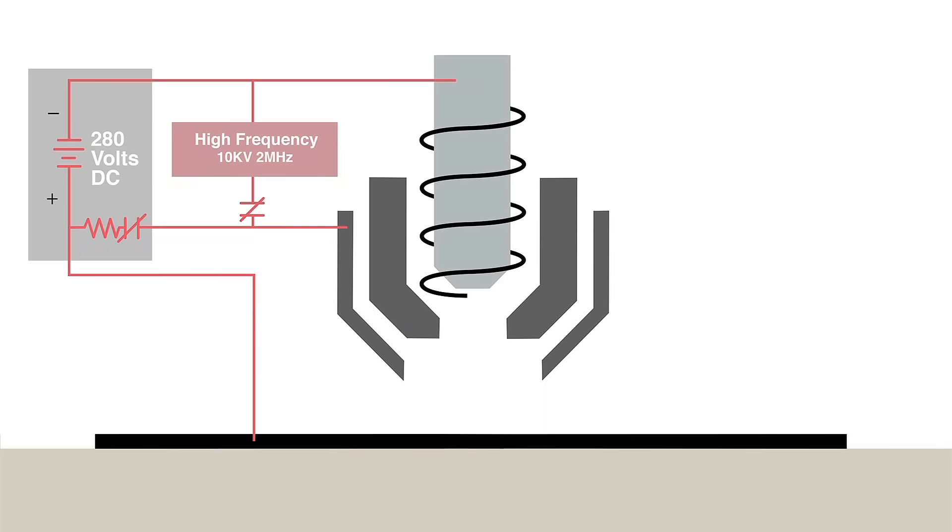When the operator is ready to cut, a start signal is sent to the DC power supply. A circuit temporarily connects the nozzle to the positive side of the power supply with the electrode at negative.